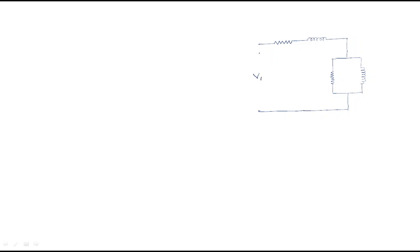When we apply the no-load test, the equivalent circuit looks like this: stator supply voltage is V1, stator has resistance R1 and inductance X1, and stator copper losses are represented by Rc. The magnetizing current is Im. The total current entering the stator is I1. Since it is a no-load test, the rotor has no current. The current I1 divides into two parts: the core loss component and the magnetizing component Im.